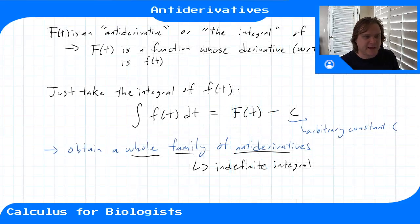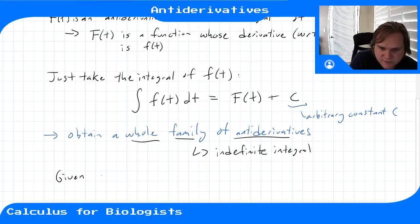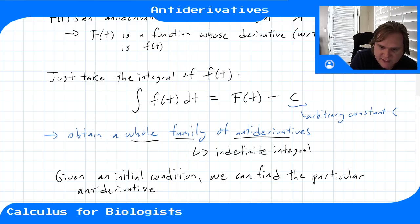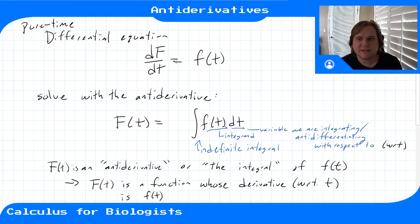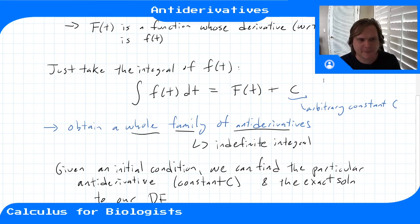We obtain a whole family of anti-derivatives. Given an initial condition, we can find the particular anti-derivative — that is, solve for the constant C — and get the exact solution to our differential equation.